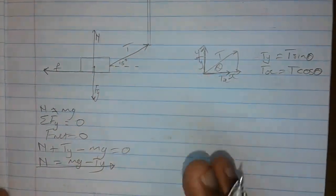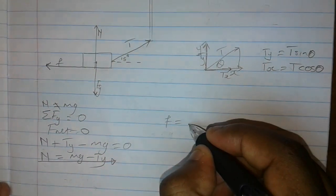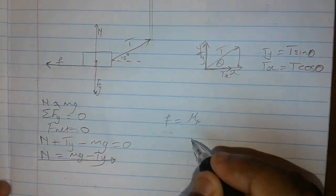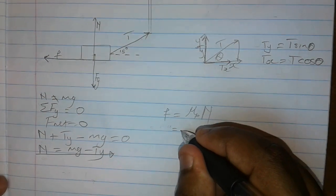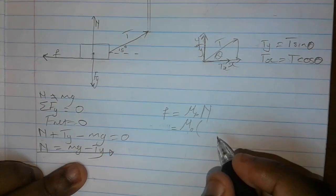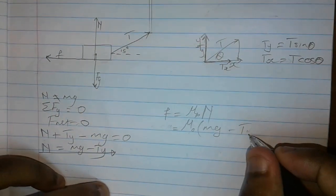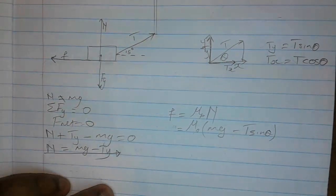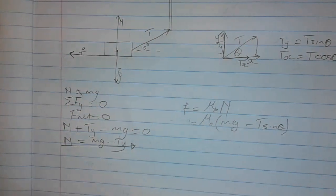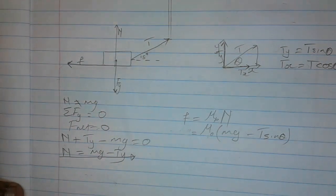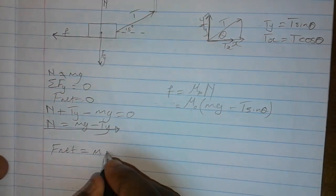Now let's calculate the frictional force. Remember that frictional force equals μk times the normal force — the coefficient of kinetic friction times the normal force. If they give you μk, you substitute it with the normal force, which is mg minus Ty, and Ty is T sin θ. But what if they didn't give us μk and we still need the frictional force? You can always sum the forces in the x-direction.